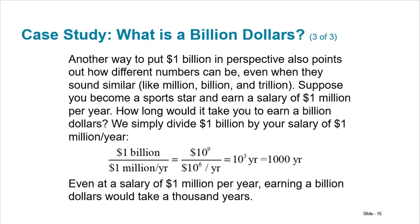We can also, another way to put it is how different numbers can be even when they sound similar: million, billion, trillion. Suppose you become a sports star and earn a salary of $1 million. How long would it take you to earn $1 billion? Well, we simply divide $1 billion by your salary of $1 million and we can see that that's 1,000 times over 1,000 years. So a billion is a thousand times bigger than a million. That's pretty big. All right. That's it for this one.